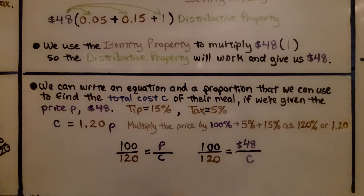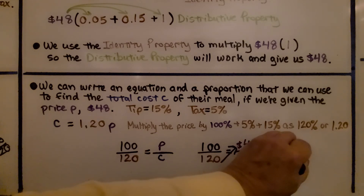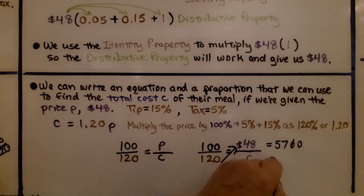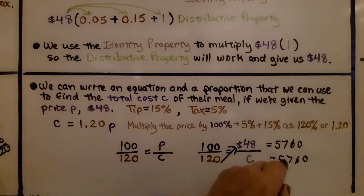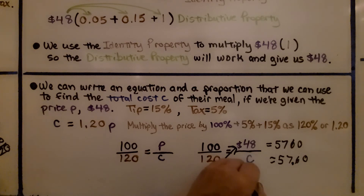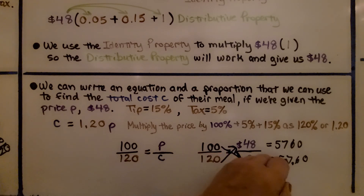If we cross multiply, we find C. We do 120 times 48 and get 5,760. We need to find what C is: 100 times C should also equal 5,760. So C equals 5,760 divided by 100, which is $57.60. That's our total cost.